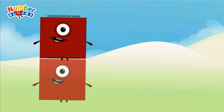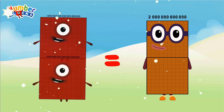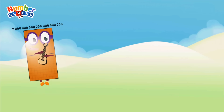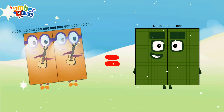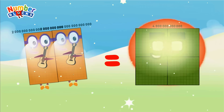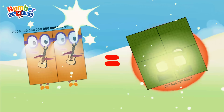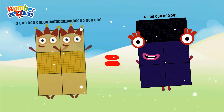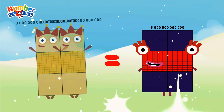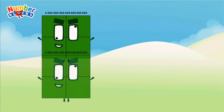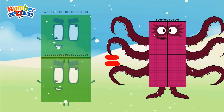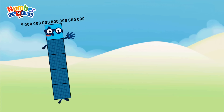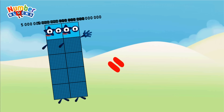One sextillion plus one sextillion equals two sextillion. Two sextillion plus two sextillion equals four sextillion. Three sextillion plus three sextillion equals six sextillion. Four sextillion plus four sextillion equals eight sextillion. Five sextillion plus five sextillion equals ten sextillion.